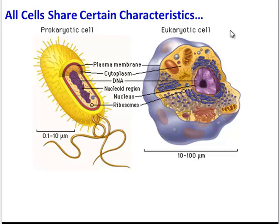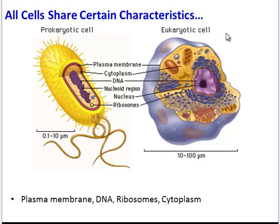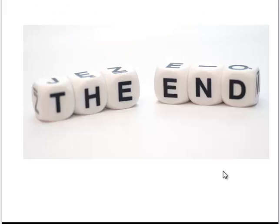To sum up, let's talk about what those cells had in common. Prokaryotes and eukaryotes share certain characteristics. They all have a plasma membrane to control what gets in and out. They all have a fluid inside their cells called cytoplasm — sometimes called cytosol. They all have DNA, although the DNA takes a different form. And they all have ribosomes to produce proteins. So that concludes our investigation of the two different types of cells.